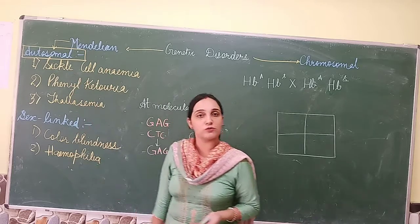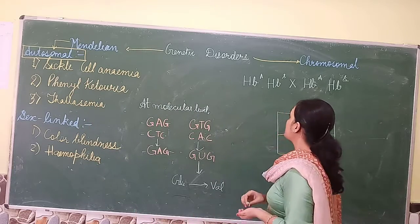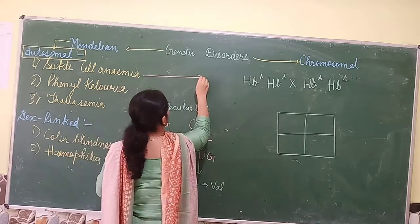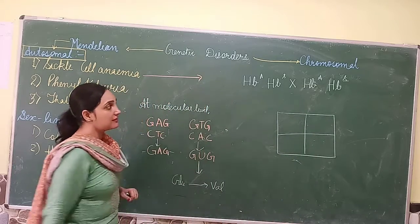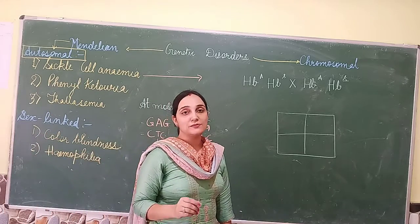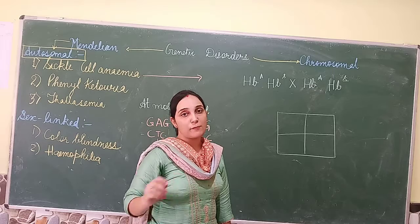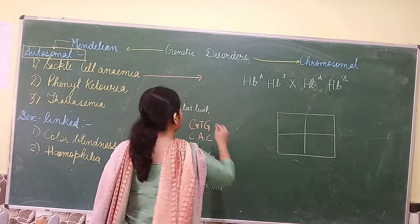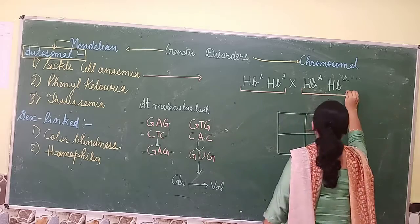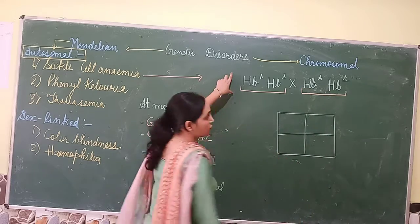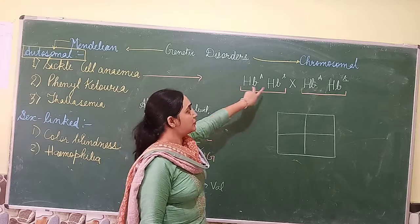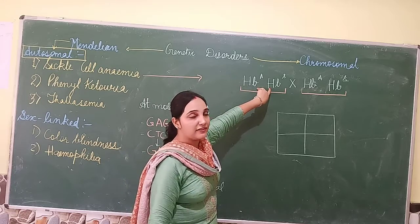First, I am going to discuss sickle cell anemia. In sickle cell anemia, heterozygous parents are responsible for passing on a particular trait. We are going to discuss a Mendelian cross between heterozygous parents. Heterozygous parents means when two adults carry different types of traits.